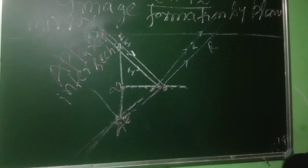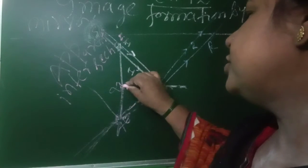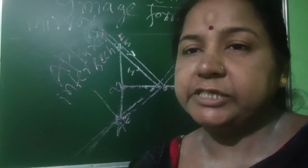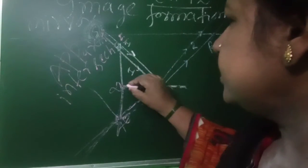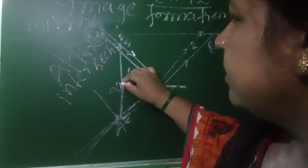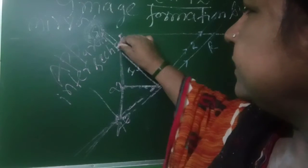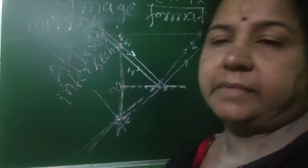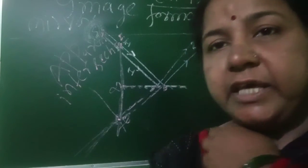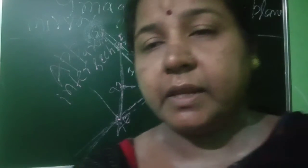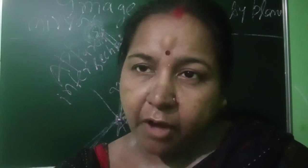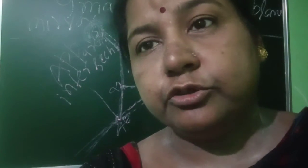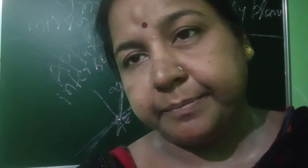So we see that the image formed by a plane mirror is at the same distance. The distance of the object from the mirror equals the distance of the image from the mirror. That is, if we stand two meters from the mirror, then my image is formed two meters behind the mirror. Understand? The image is formed at the same distance, and this is the virtual image.